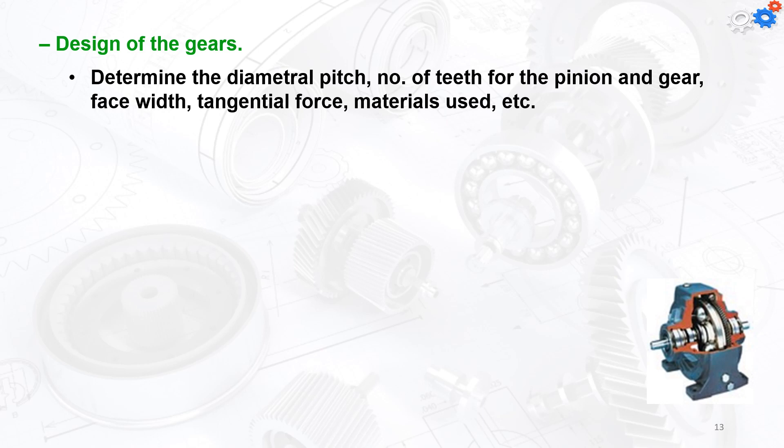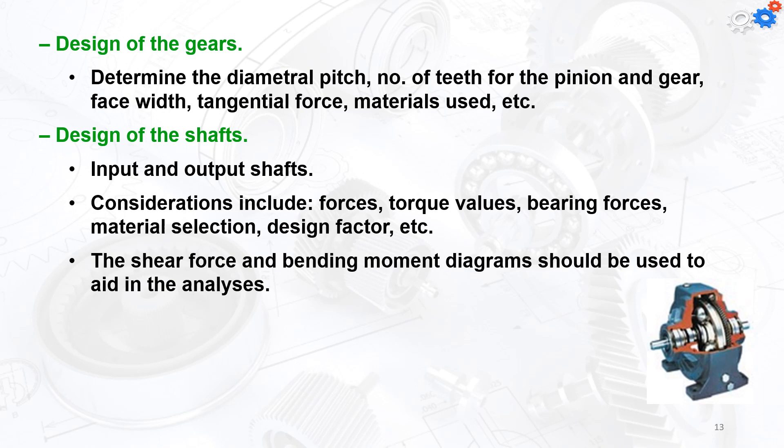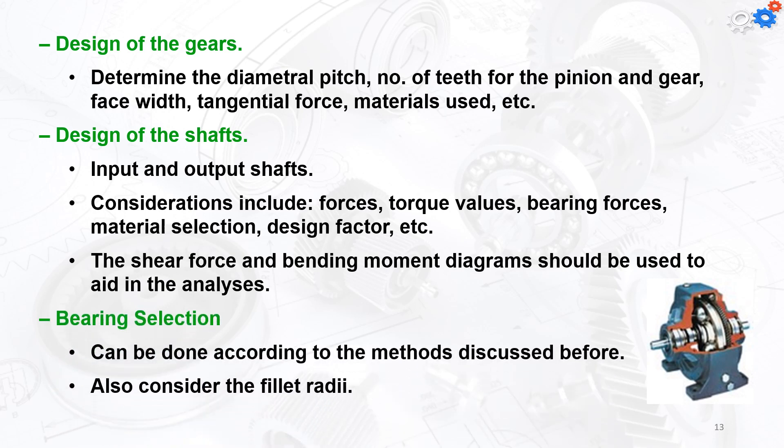The design steps start with design of the gears. We need to find the diameter of each valve, number of teeth for pinion and gear, face width, tangential force, and material used. Design of the shaft involves finding input and output shafts, considering forces, torque values, bearing forces, material selection, and design factors. Shear force and bending moment diagrams should aid in the analysis. The bearing selection follows according to the method discussed before, and consider for the fillet radius on the shaft edge.